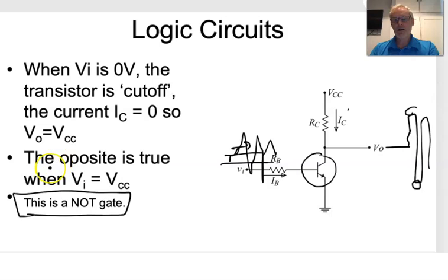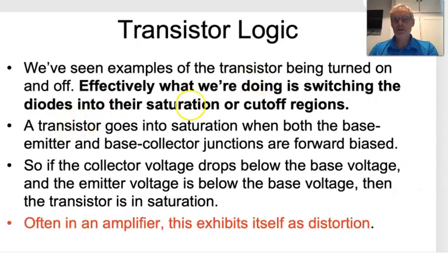Now these regions of when the transistor's fully switched on and fully switched off are often referred to as the saturation and cutoff regions. So it's saturated when the transistor's fully on and it's cutoff when the transistor's off. That's okay for transistor logic because we want either fully on or fully off, but for audio we want somewhere in the middle, and we call the middle region the active region of a transistor.